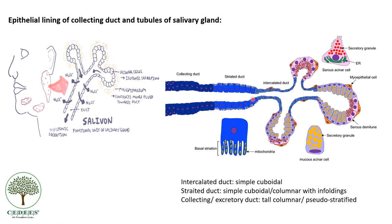When the fluid moves through the striated ducts, which are lined by columnar cells with many striations, sodium and chloride are reabsorbed from the isotonic fluid, making the saliva hypotonic. So initially it is isotonic, then in the striated duct it becomes hypotonic due to reabsorption of sodium and chloride ions. Then it goes into the collecting or excretory ducts, which are lined by tall columnar epithelial cells, also sometimes called pseudostratified columnar epithelium.